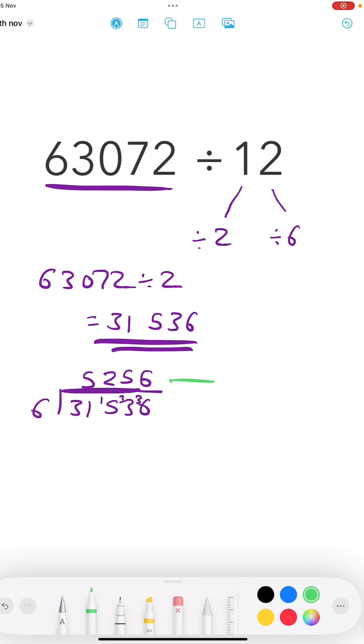So my answer is 5,256. Now you can also do this the other way around. You could actually divide by 6 first and then half your answer, and you'd get exactly the same solution as if you did it the way we've just shown here.